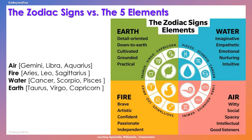Is there a relationship between zodiac signs and the five elements of nature? Apparently there is. Zodiac signs are either earthy, watery, fiery, or airy. Gemini, Libra, and Aquarius are the air signs. Aries, Leo, and Sagittarius are the fire signs. Cancer, Scorpio, and Pisces are the water signs. Taurus, Virgo, and Capricorn are the earth signs. Therefore they embody the qualities of that element of nature.